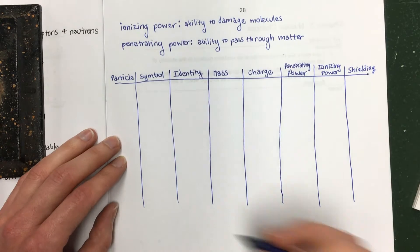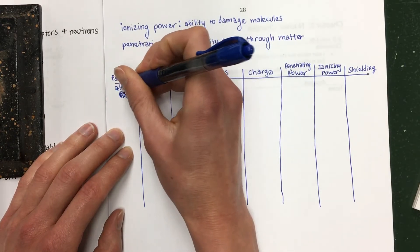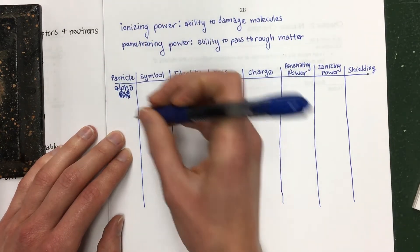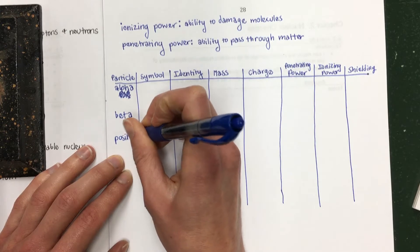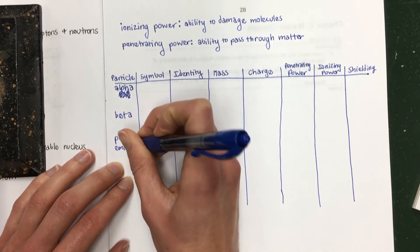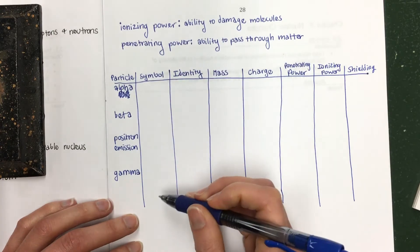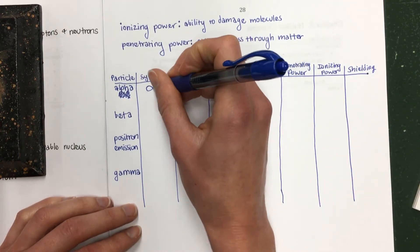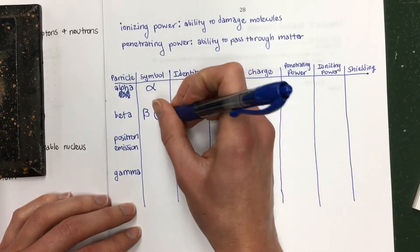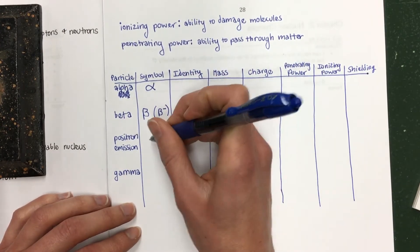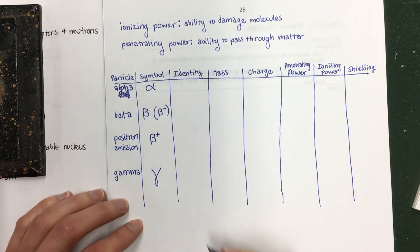The types of radiation we're going to talk about are alpha particles. Sorry, I didn't want to write the symbol, I want to write the word. Alpha, beta, positron emission, which is actually a type of beta decay, and gamma radiation. There's symbols for each of these types of radiation, and they're Greek symbols. The symbol for alpha is that. Beta looks like that, and sometimes it's written with a little minus. A positron looks like beta, but it has a positive instead of a negative. And gamma, that is the Greek letter gamma.